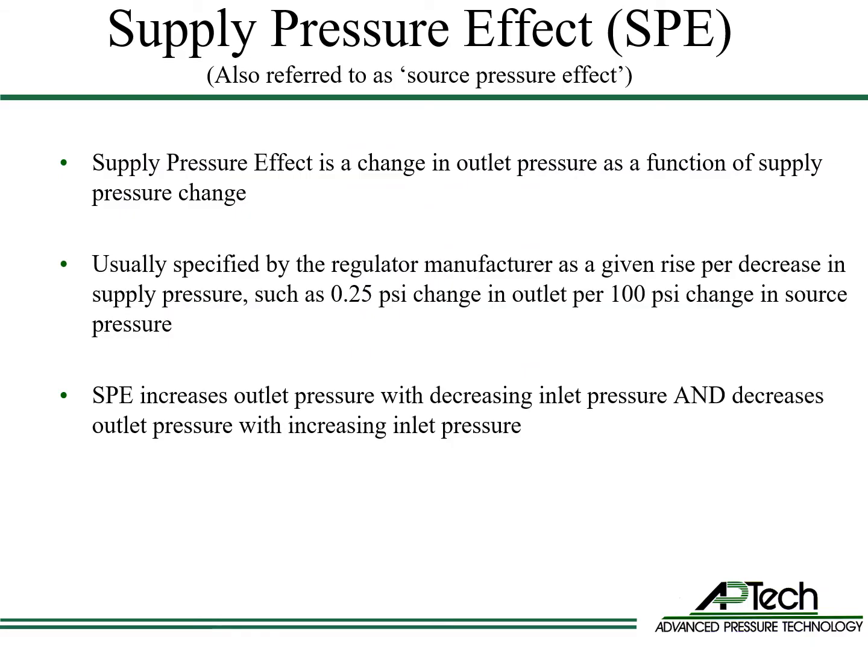Supply pressure effect is a change in outlet pressure as a function of supply pressure change. This effect is usually specified as the change in outlet pressure per change in inlet pressure — for example, 0.25 psi change in outlet pressure per 100 psi change in inlet pressure. Normally, supply pressure effect is encountered when the inlet pressure decreases as gas cylinders are consumed. As a result, outlet pressure increases as a gas cylinder is consumed. However, the supply pressure effect works with both decreasing and increasing inlet pressure. An increase in inlet pressure will cause a decrease in outlet pressure at the same rate as specified.